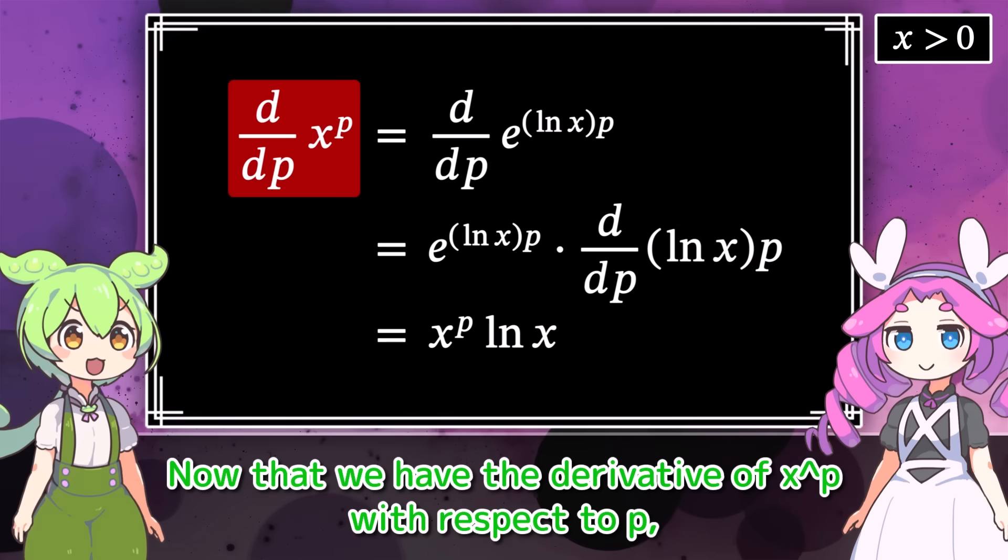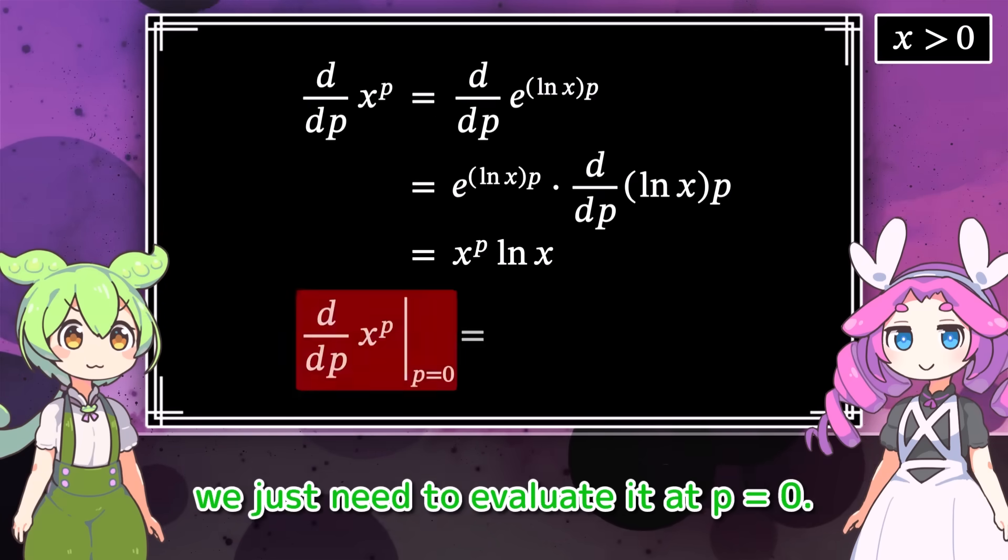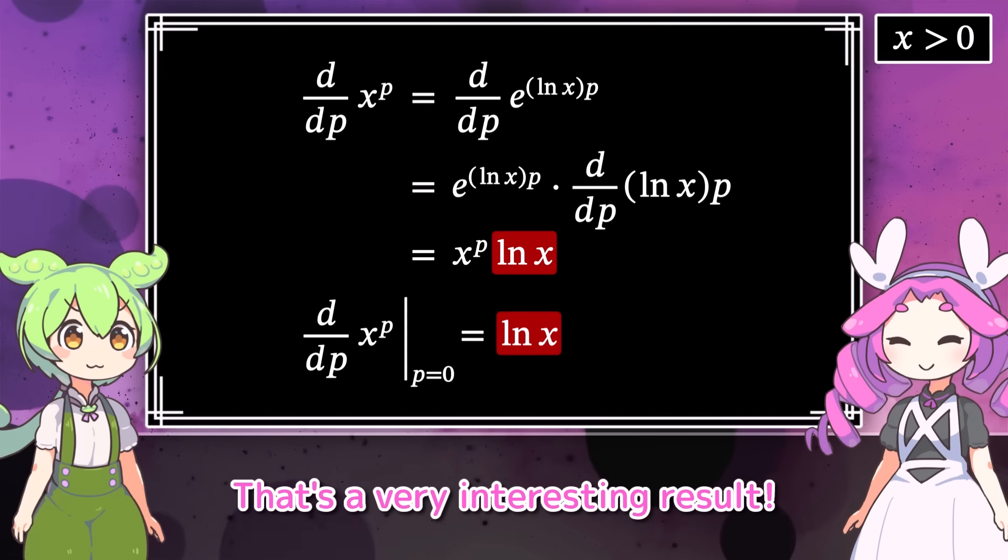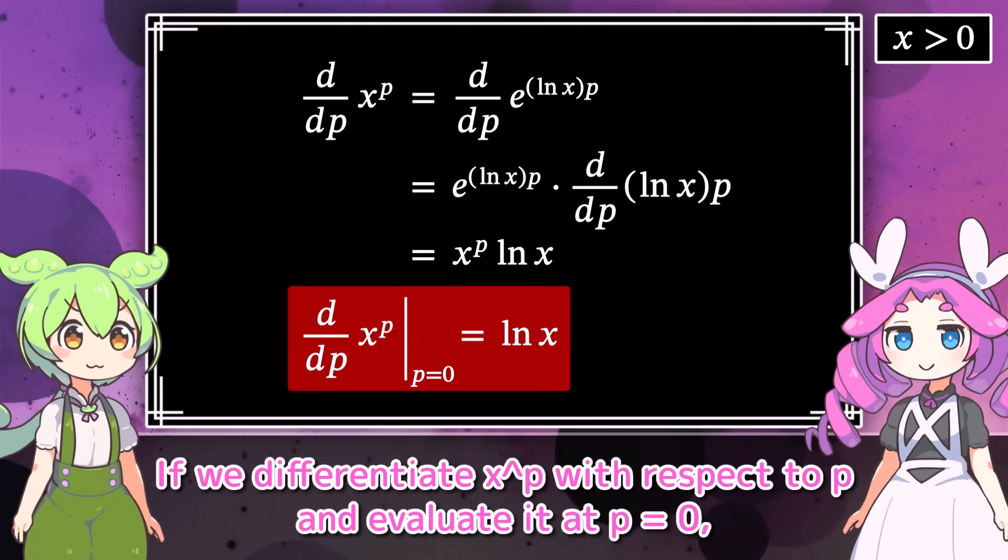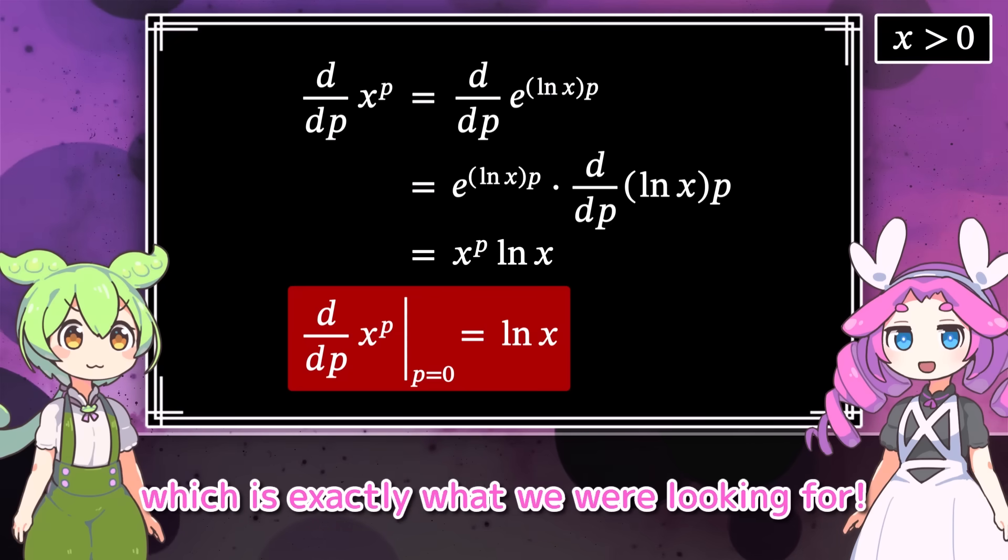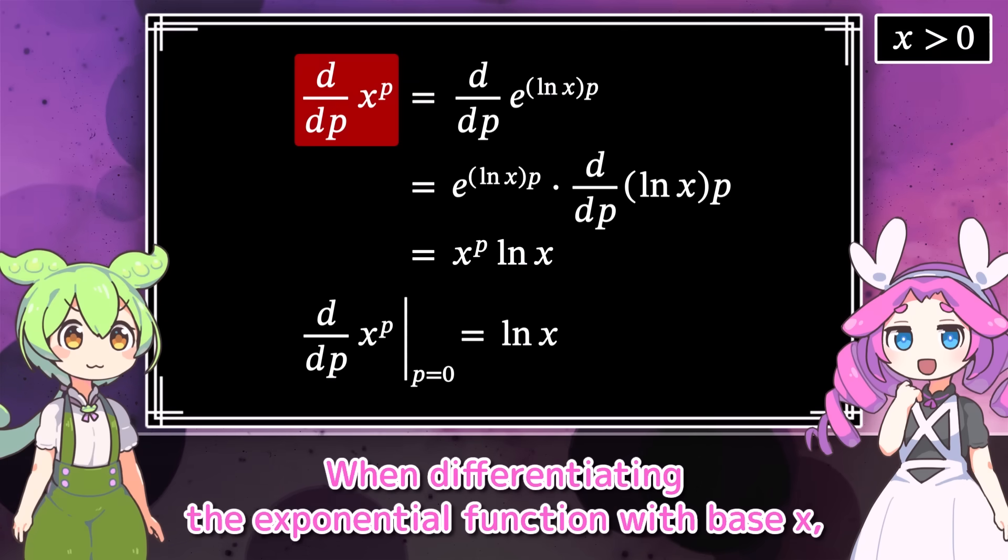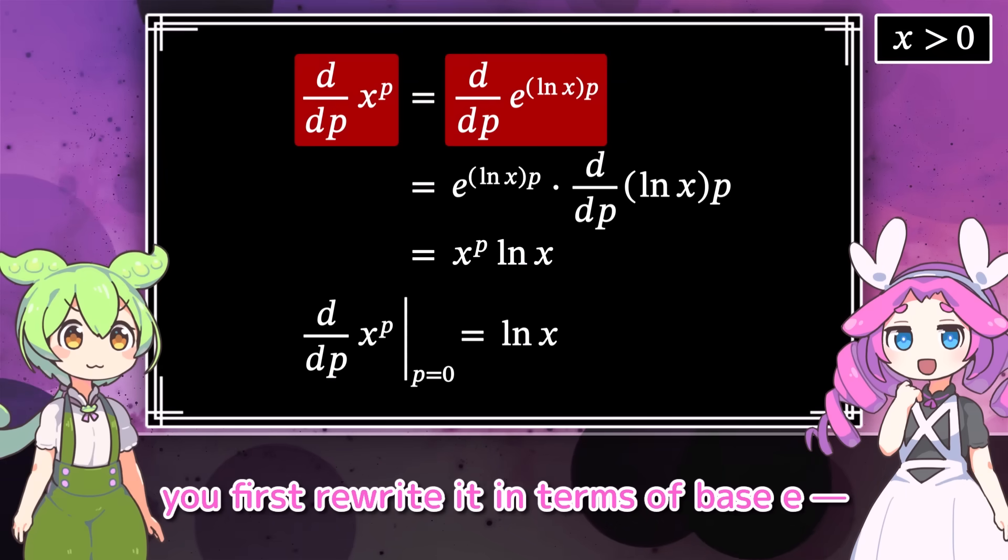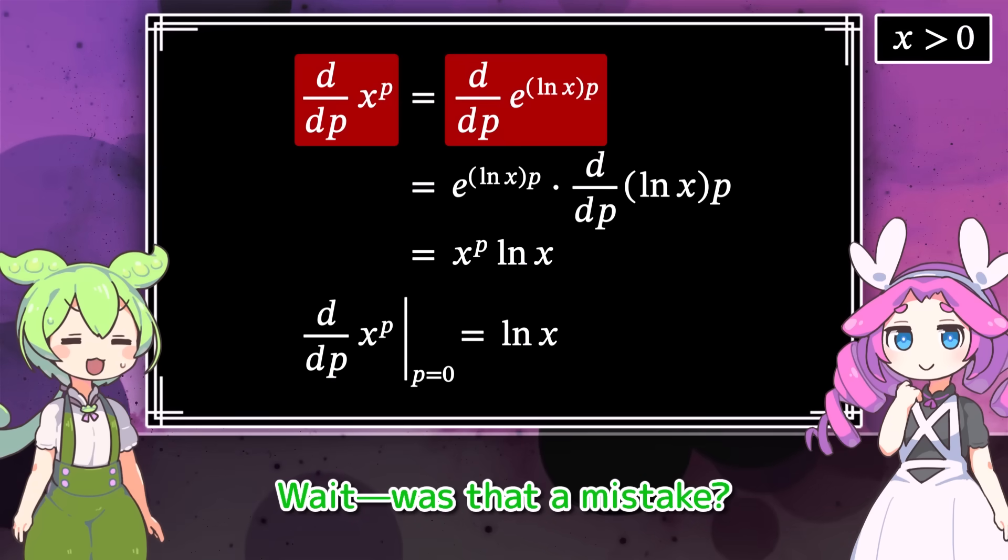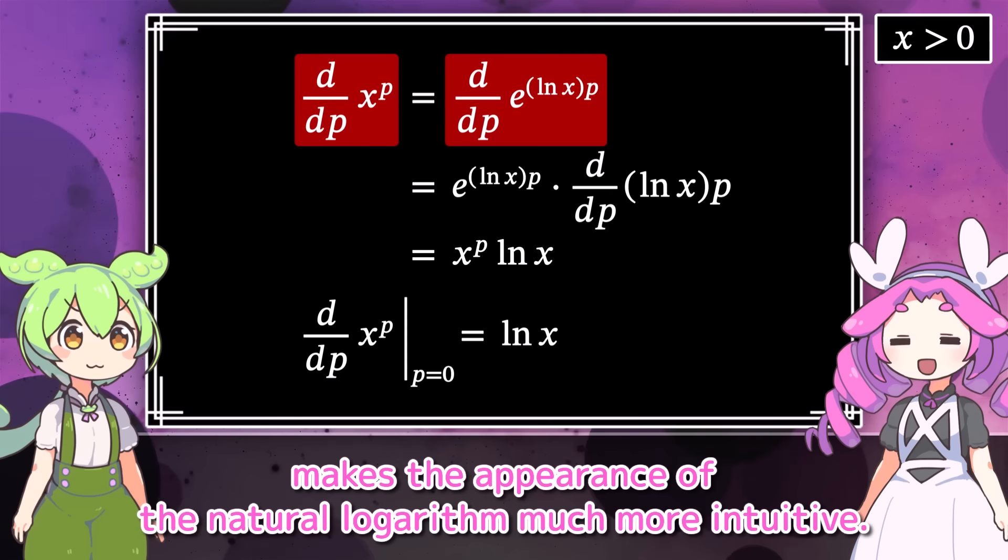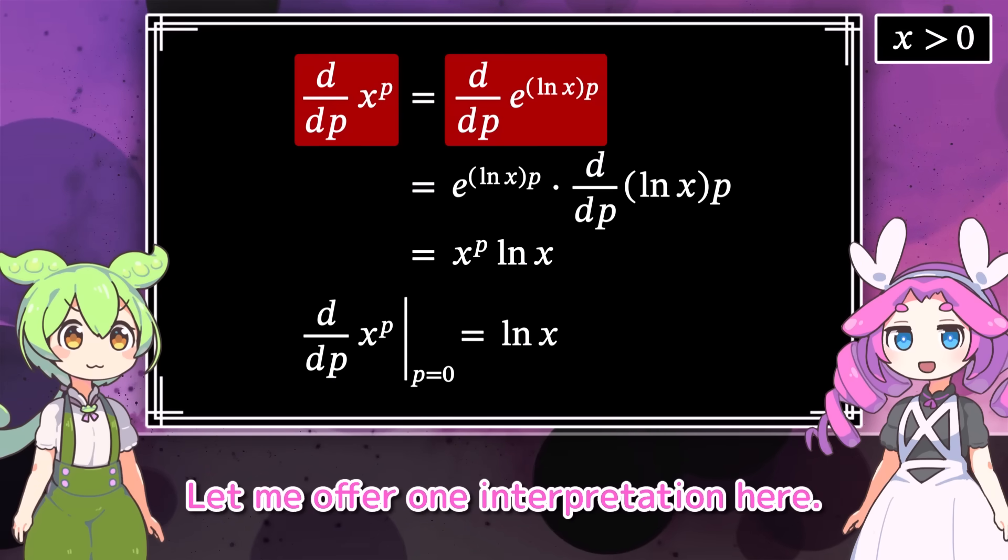You're doing great! Now that we have the derivative of x to the p with respect to p, we just need to evaluate it at p equals 0. Since x to the 0 is 1, the answer is the natural log of x. That's a very interesting result. If we differentiate x to the p with respect to p and evaluate it at p equals 0, we get the natural logarithm. Which is exactly what we were looking for. But there's still something strange about this. When differentiating the exponential function with base x, you first rewrite it in terms of base e. Some might feel that's a bit redundant.